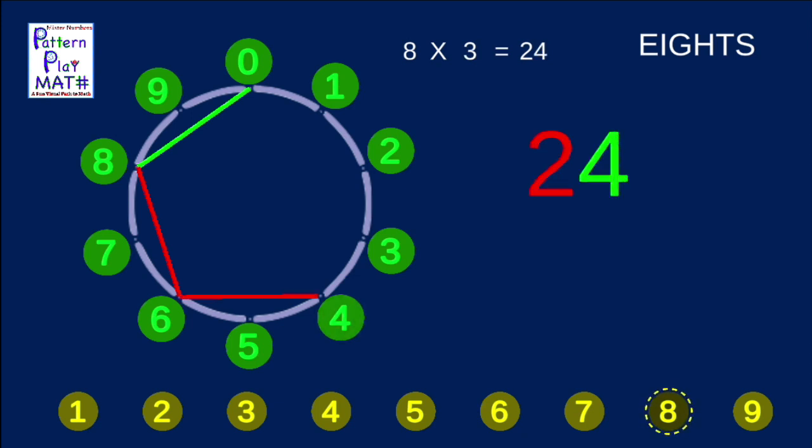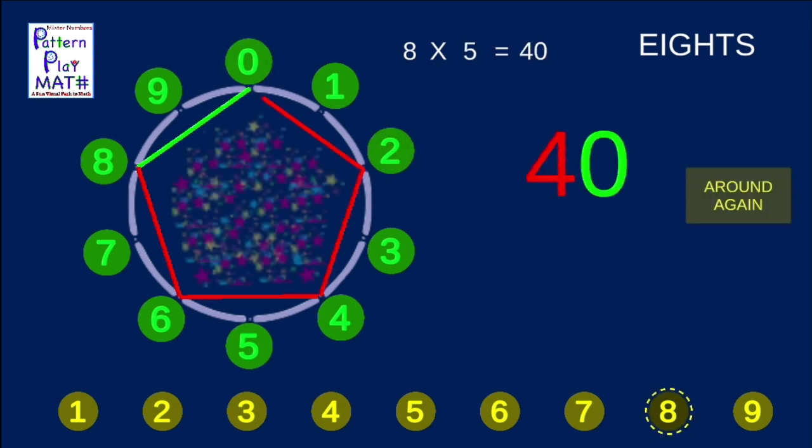Around 8 more takes you to 4. You went past 0 again, so the big numbers now say 24. Then 32. 8, 6, 4, 2, 0.